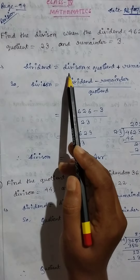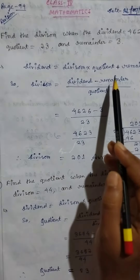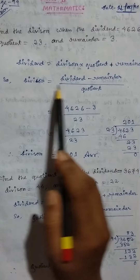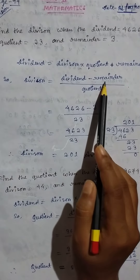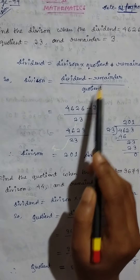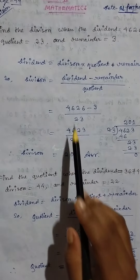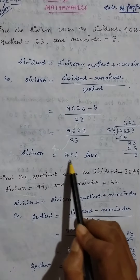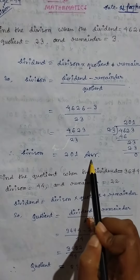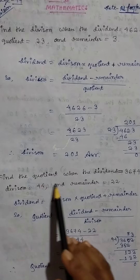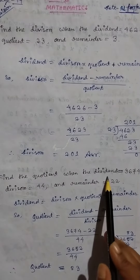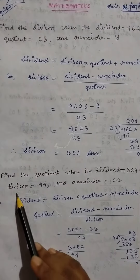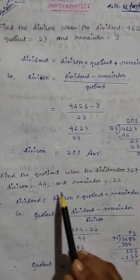So, dividend equals divisor into quotient plus remainder. Therefore, divisor equals dividend minus remainder divided by quotient. The answer: divisor equals 201.